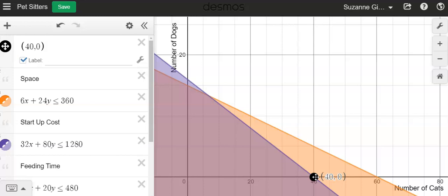That does meet the requirements. So if you wanted all cats, 40 cats, that is a solution to this system of inequalities.